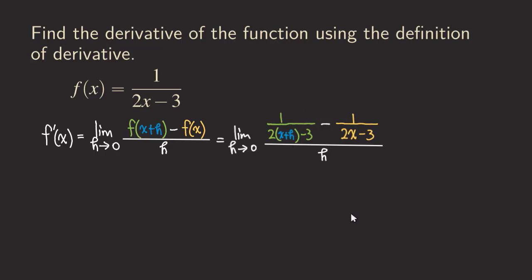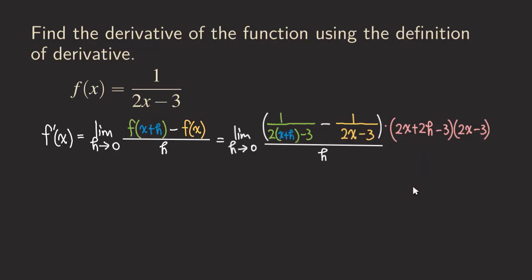We're going to do something to this expression — multiply the top and the bottom by something. We can multiply by the LCD, which is the product of the two denominators together. So we multiply the top by (2x + 2h − 3)(2x − 3). As you can see, that factor is the same as this denominator here — I just distributed the two. We do the same thing to the bottom.